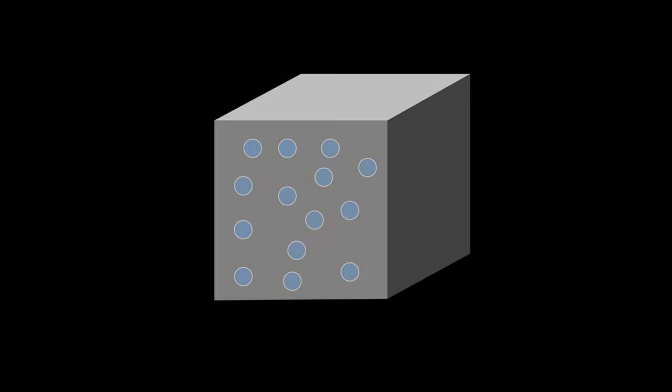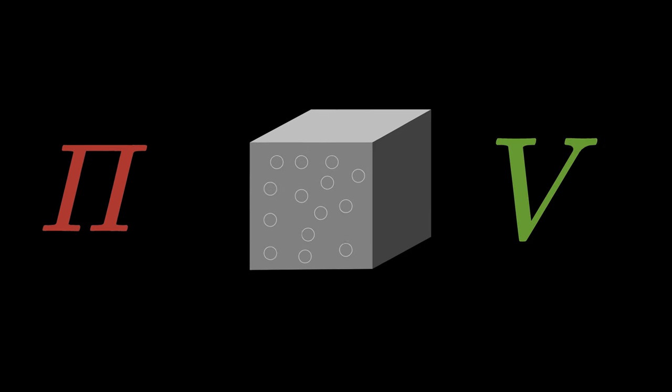If we heat the gas and thus increase its temperature T, we are talking about a thermodynamic process. We could also compress the gas, thereby increasing the pressure and reducing the volume.